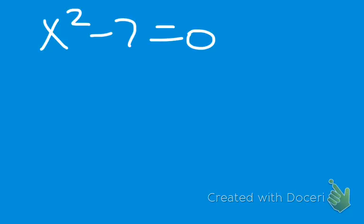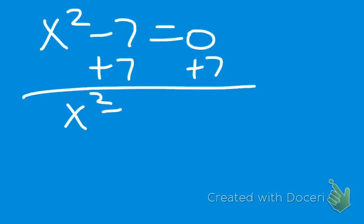So this is similar to when you're just solving equations. We're going to move that 7 to the other side. We're going to add 7 to both sides. If we were to do it the way we had done it before, 7 doesn't have a perfect square root, so it doesn't really work. So we're going to add the 7 to both sides, and we'll get x squared equals 7.